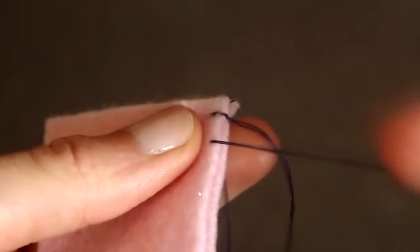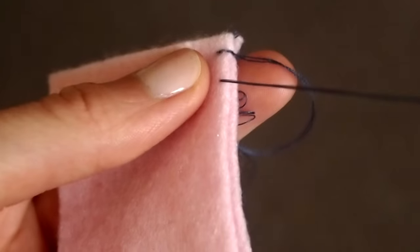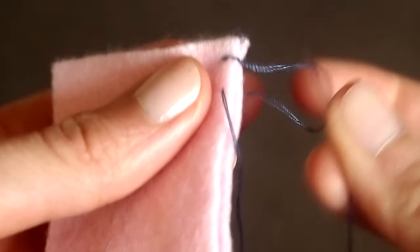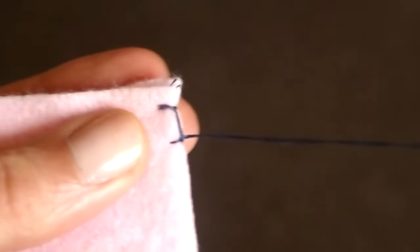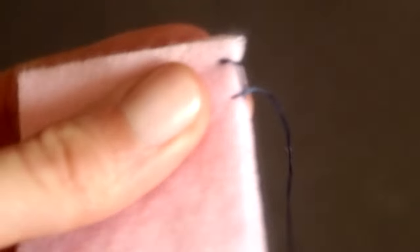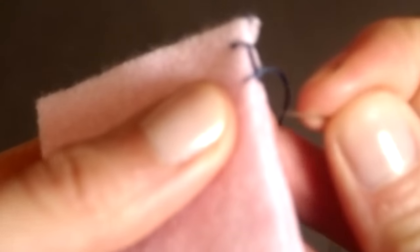I'm going to pull it nearly all the way through leaving a loop just like before, and then I'm going to put my needle through the loop and pull. And that's your second stitch. So I'm just going to keep doing this a couple more times for you guys.